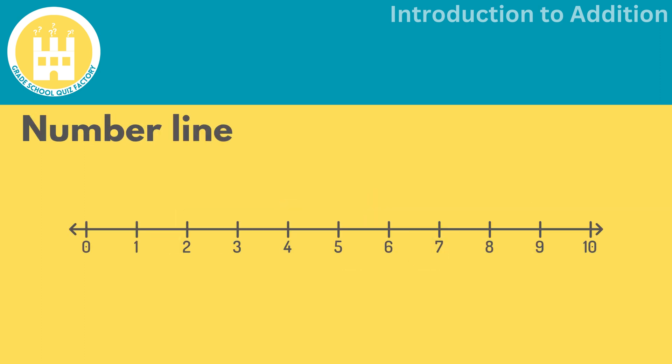Another method to add is by using a number line. A number line is a tool to help us visualize addition. Let's say we want to add three to the number two. We can start at two on the number line and hop three steps forward.